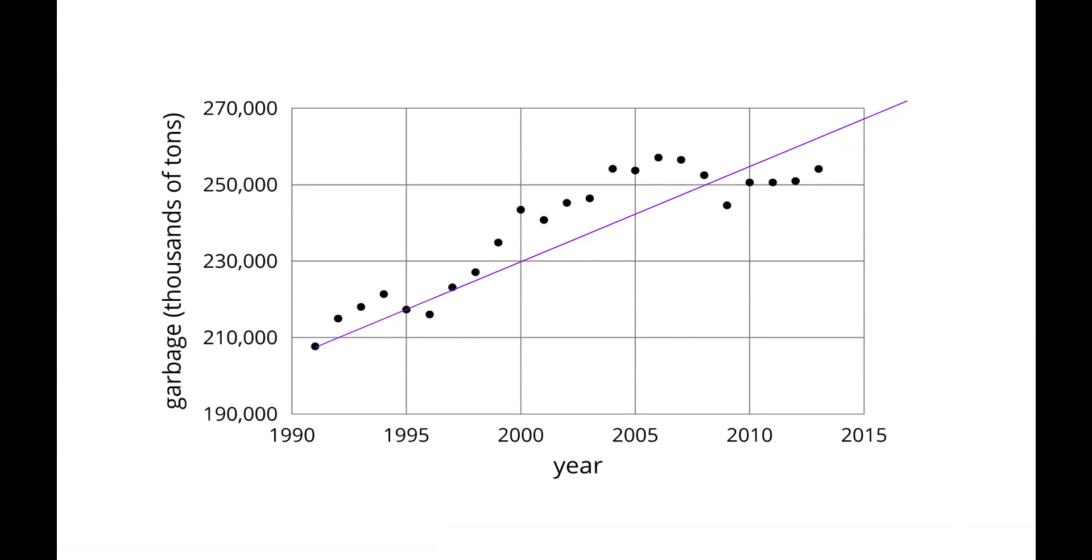But if a single line is drawn to show the pattern of the data from 1990 until 2014, the model is not as good, even though it shows us that the amount of garbage is, in general, increasing over time.